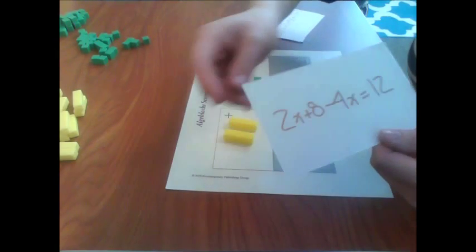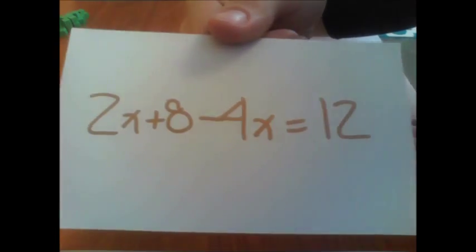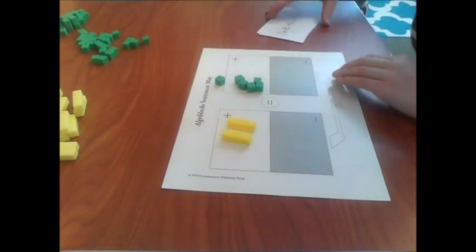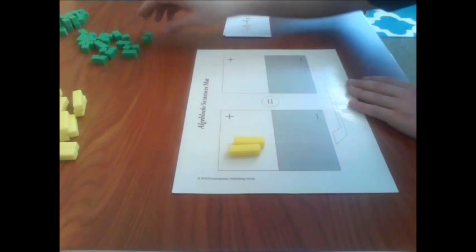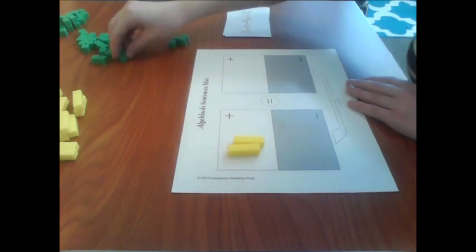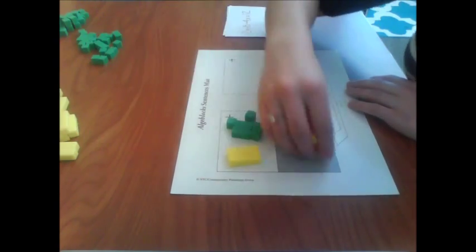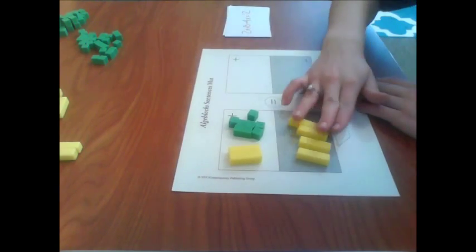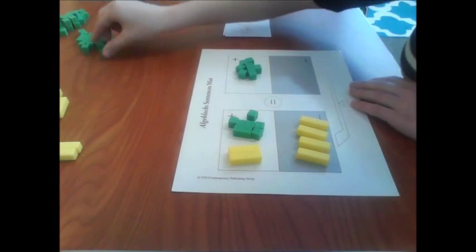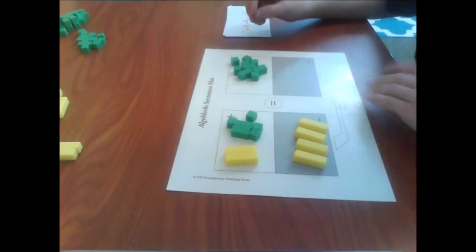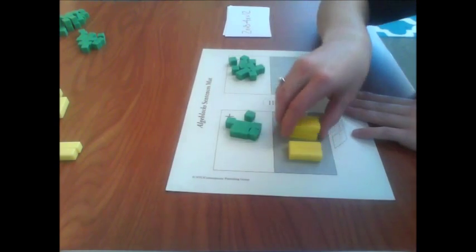My next equation is 2x plus 8 minus 4x equals 12. So we'll set that up. We have 2x plus 8 minus 4x, so those go in the bottom, equals 12. You notice again that you're going to have a zero pair — 2 and 2 of your x's cancel out.